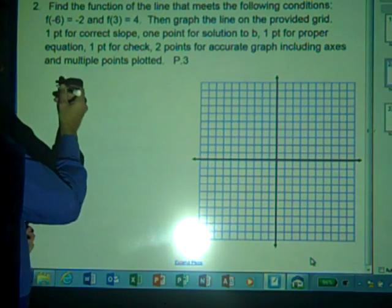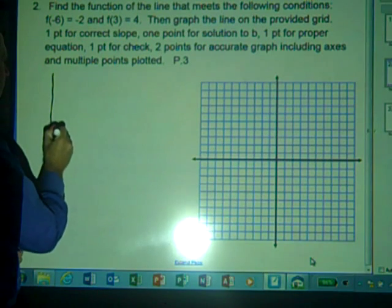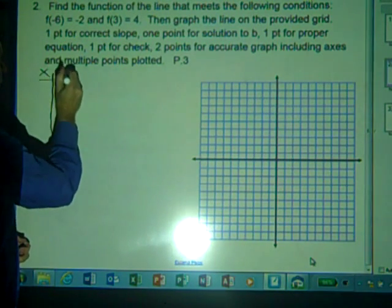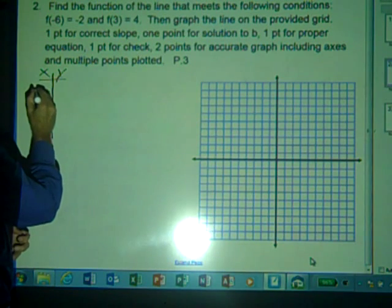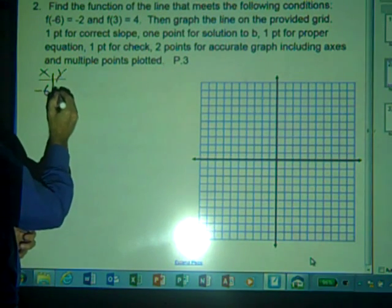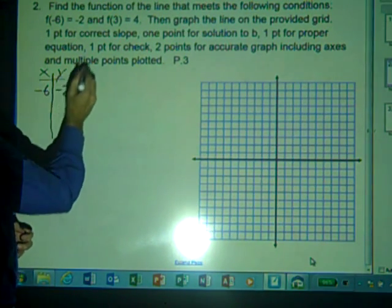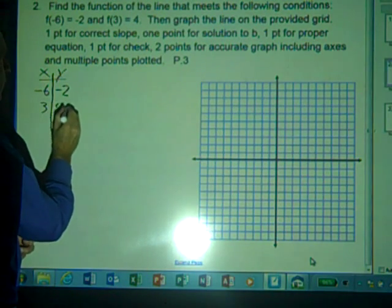So we're going to rewrite this data in numerical form, a table. We have input of negative 6 equals negative 2 and input of 3 equals 4.